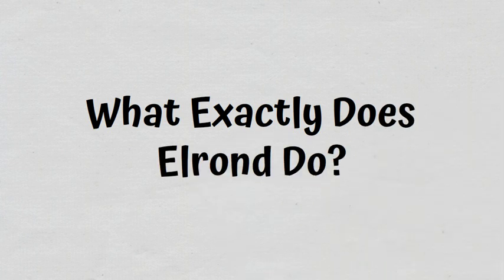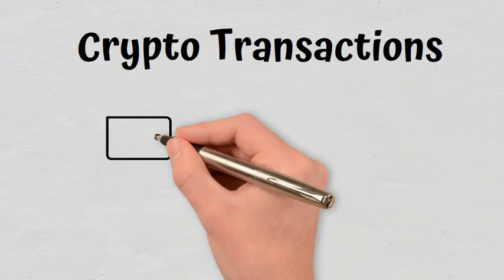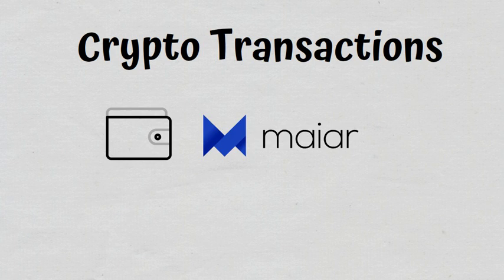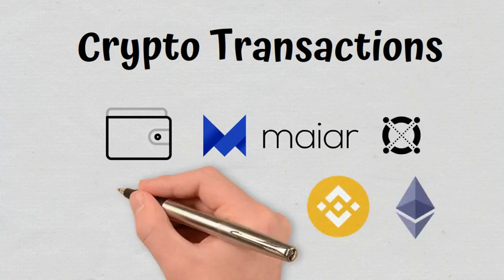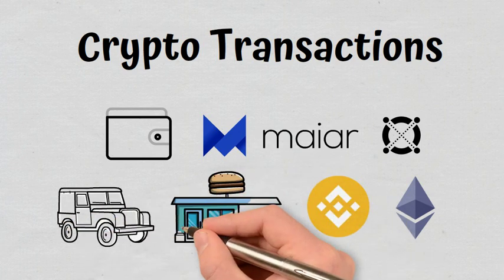What exactly does Elrond do? The Elrond blockchain powers the following functions. Crypto transactions. The ecosystem has its own decentralized crypto wallet, Mayar, through which users can send and receive e-gold, BNB, and ETH. You can also pay for goods and services if e-gold is accepted as an alternative payment method.